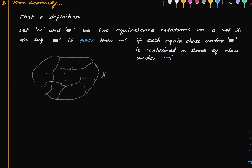That's the notion of fineness. We say one relation is finer than another, or coarser, and those things follow automatically.